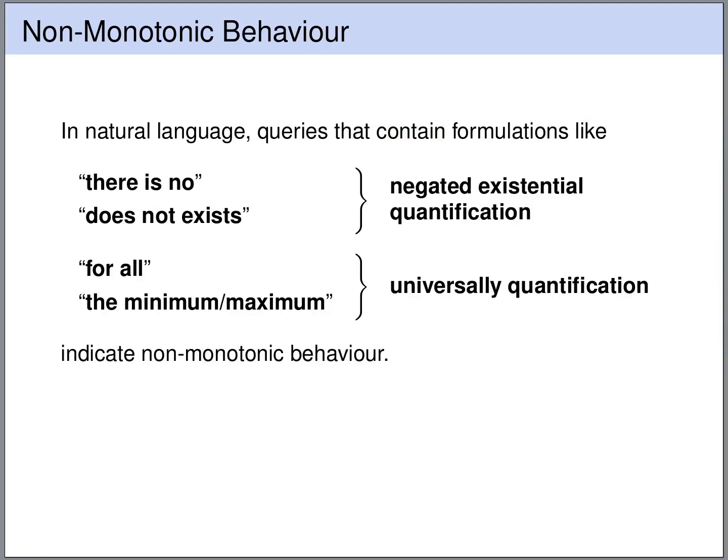In natural language, non-monotonic behavior is indicated by statements like 'there is no,' 'there does not exist,' 'for all,' 'the minimum,' or 'maximum.' 'There is no' and 'there does not exist' correspond to negated existential quantification, while 'for all,' 'the minimum,' and 'maximum' correspond to universal quantification.